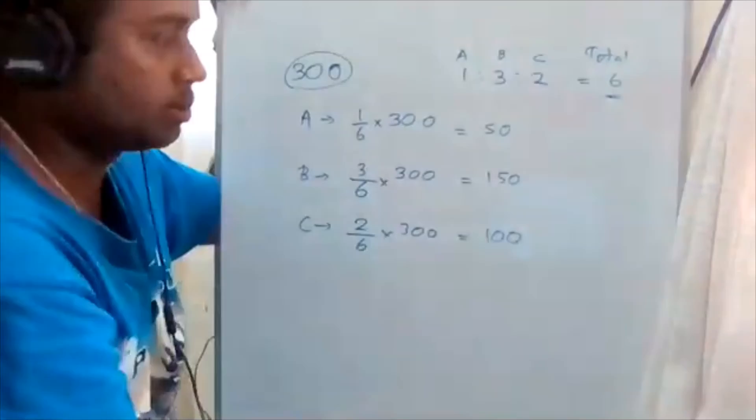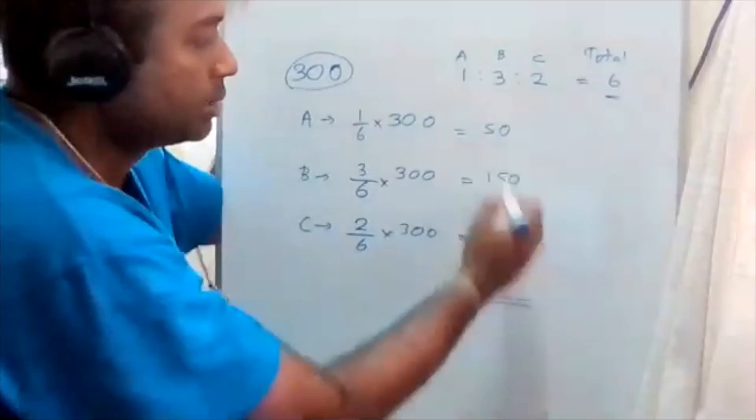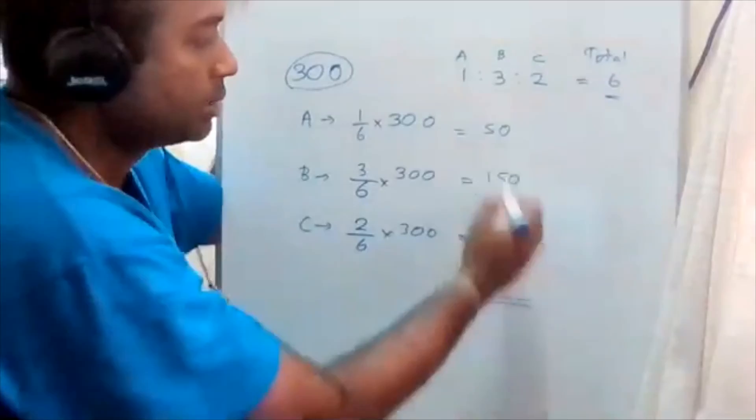If you add all the amounts together, you can check whether they sum to 300. This verification confirms you have divided the total correctly among A, B, and C.